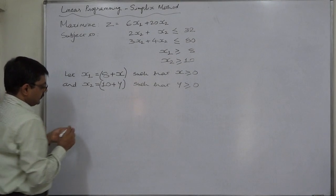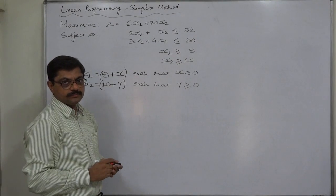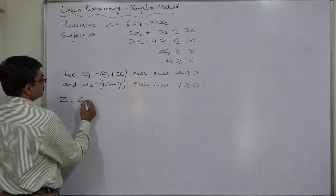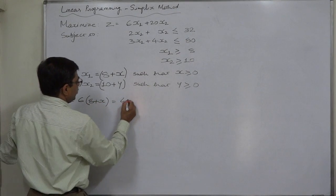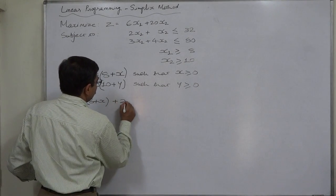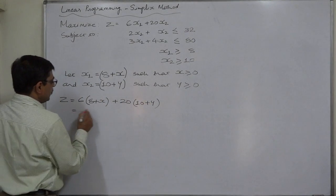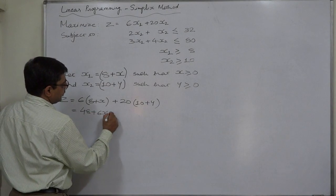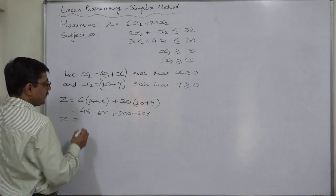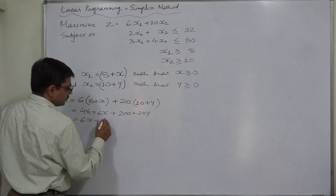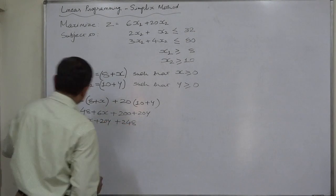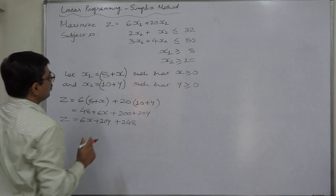After substitution, z becomes: 6(8 + x) + 20(10 + y), which gives 48 + 6x + 200 + 20y. Ultimately our objective function becomes: maximize z = 6x + 20y + 248.